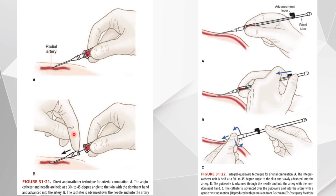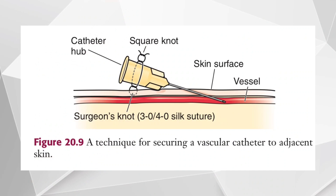There are two techniques used. The first is the direct angiocatheter technique: the angiocatheter and needle are held at a 30 to 45 degree angle to the skin with the dominant hand and advanced into the artery, after which the catheter is advanced over the needle and into the artery. The second is the integral guide wire technique: the integral catheter unit is held at a 30 to 45 degree angle and slowly advanced into the artery, then the guide wire is advanced into the artery and the catheter is advanced over the guide wire with a gentle twisting motion. Secure the vascular catheter onto the adjacent skin using a 3-0 or 4-0 suture.